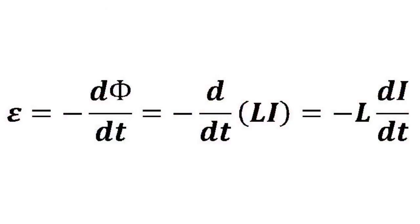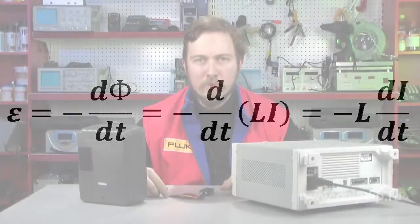If we apply Faraday's law of electromagnetic induction to the phenomenon of self-induction, we will arrive at the following conclusion: the self-induction EMF, which emerges in the circuit as its current changes, is directly proportional to the rate of change of this current.